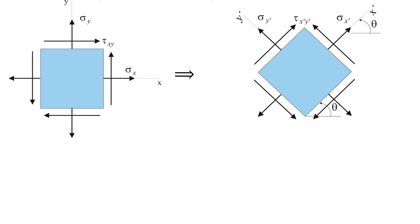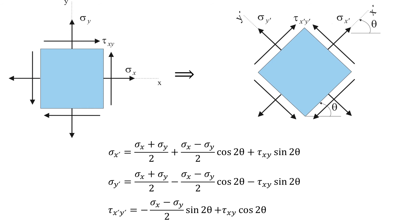The general equations of plane stress transformation are as follows. Basically, if we know the two normal stress components sigma x and sigma y, and one shear stress tau xy acting on a given plane, using these three equations we can find the stress components that act on any other plane that has a different orientation of theta.